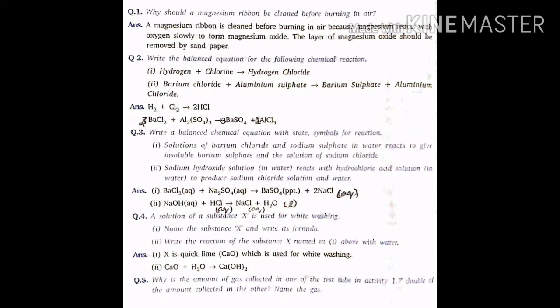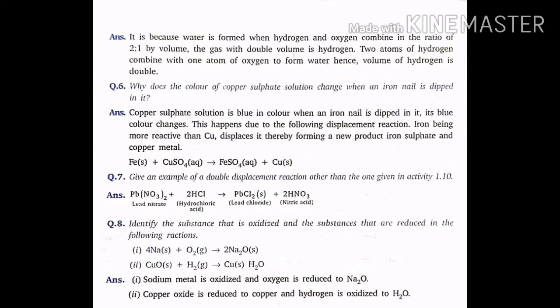Question number 5. What is the amount of gas collected in one of the test tube in activity 1.7, double of the amount collected in the other? Name the gas. Answer: It is because water is formed when hydrogen and oxygen combine in the ratio of 2 is to 1 by volume. The gas with double volume is hydrogen. Two atoms of hydrogen combine with one atom of oxygen to form water. Hence, volume of hydrogen is double.